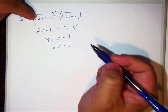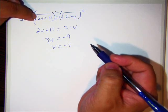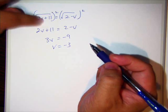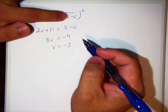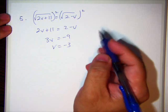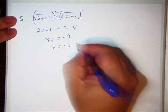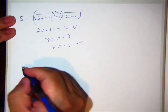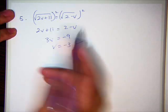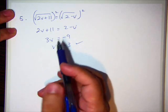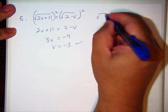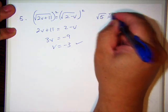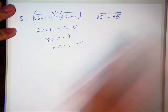We check it. -3 times 2 is -6. Plus 11 is 5. So the left side turns out to be √5. 2 minus -3 is 5. So the right-hand side turns out to be √5. So that one works. Okay. In case you can't follow my verbal descriptions, see if we can figure out how I got √5 = √5. All right. Going on to number 7.